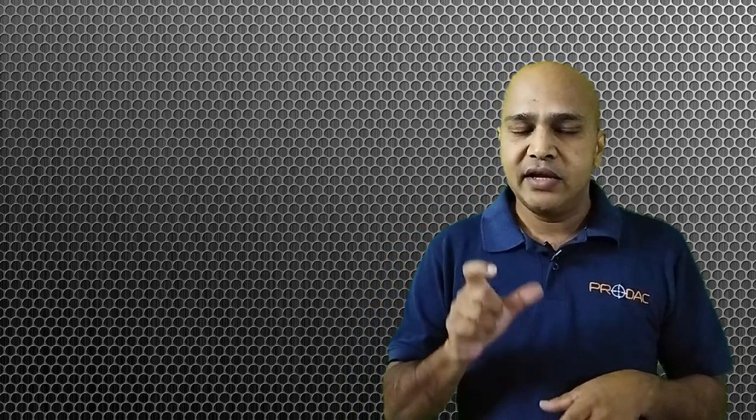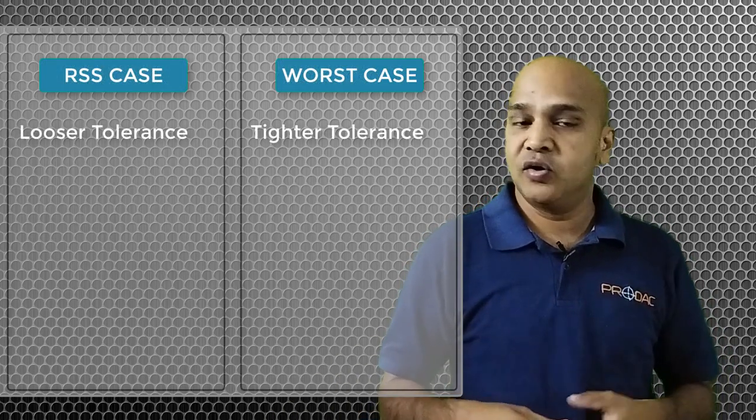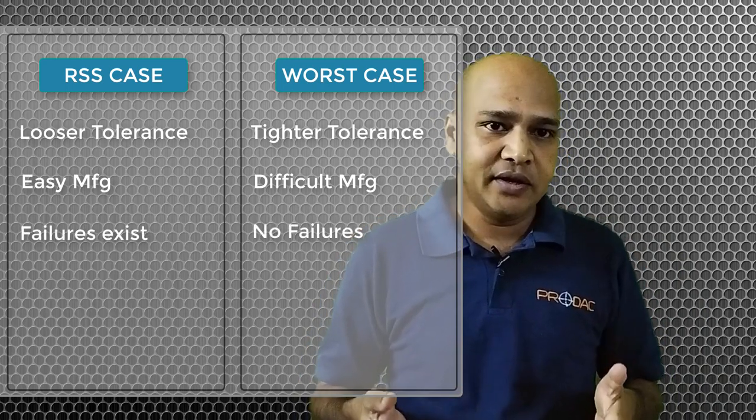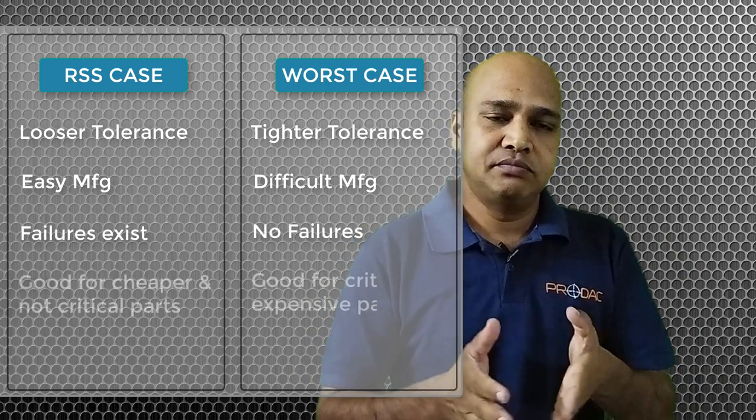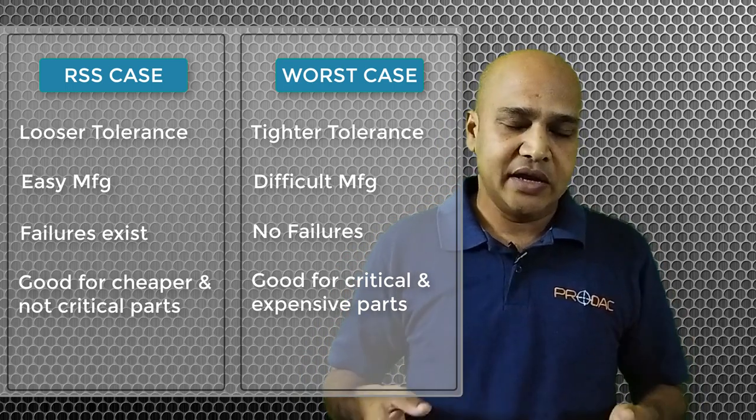And the production is in very large volume. There we can accept the rejection because the cost is very low. But if we tighten the tolerance like by using worst-case, the part cost will go high. And since the application is not very critical because it's just a home appliance product.